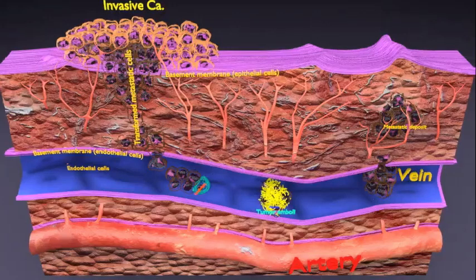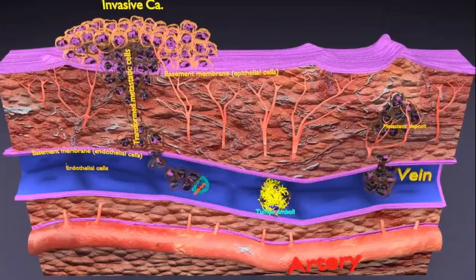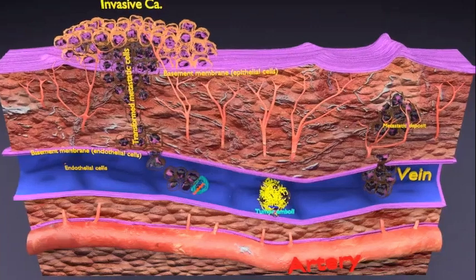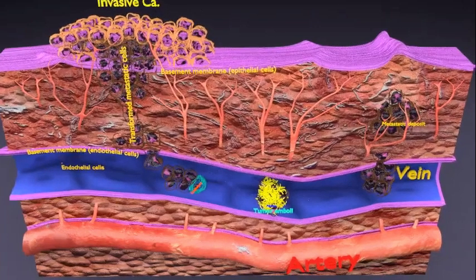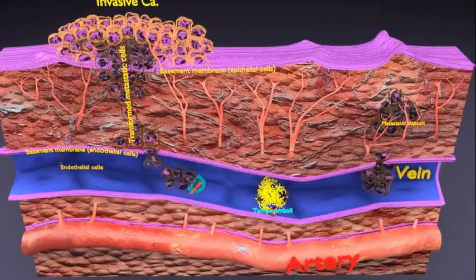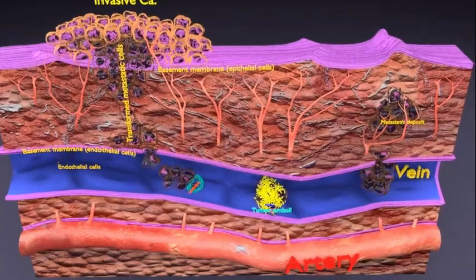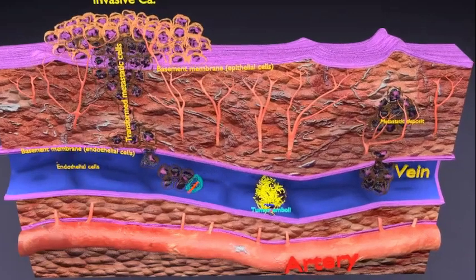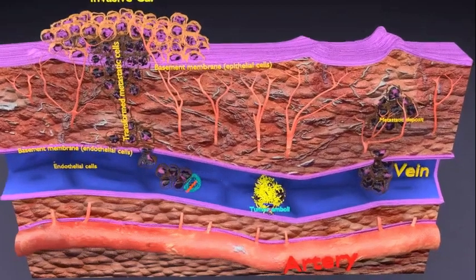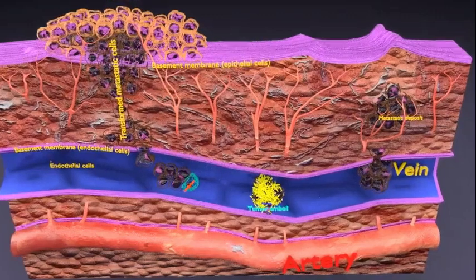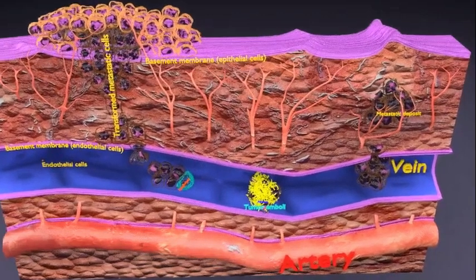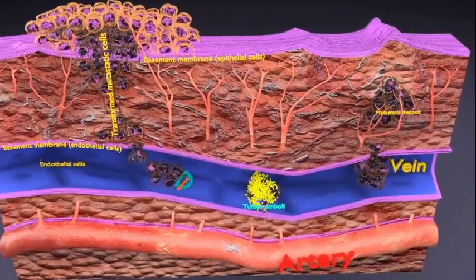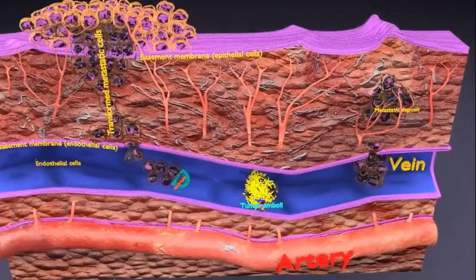Metastasis is the word used to describe a cluster of cancer cells in one area that arose from a cancer in another region of the body. Cancer that has spread in this way is called metastatic cancer. Metastatic cancer is named based on the site where the cancer began.